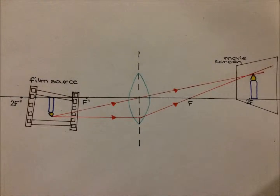When we look at the image produced by a projector — which is the movie or video it is projecting — we can see the image is larger than the object. The object is the film, CD, or DVD inserted into the projector. There is only one case in which the image produced is larger than the object: this is when the object is located between two times the distance of the secondary principal focus and the secondary principal focus itself. Therefore, this is the positioning of the object from the lens in a projector. When an object is placed in this position, the image created is always larger, inverted, and located beyond two times the distance of the principal focus.